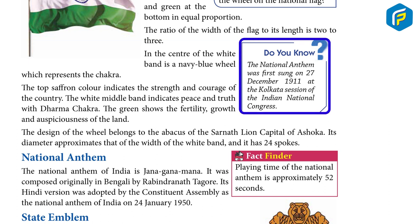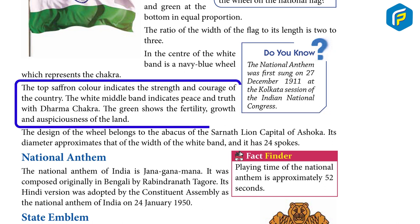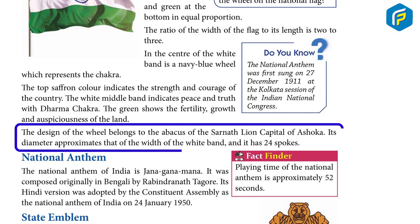The national anthem was first sung on 27 December 1911 at the Kolkata session of the Indian National Congress. The top saffron color indicates the strength and courage of the country. The white middle band indicates peace and truth with the Dharma Chakra. The green shows the fertility, growth and auspiciousness of the land. The design of the wheel belongs to the abacus of the Sarnath Lion Capital of Ashoka. Its diameter approximates the width of the white band and it has 24 spokes.